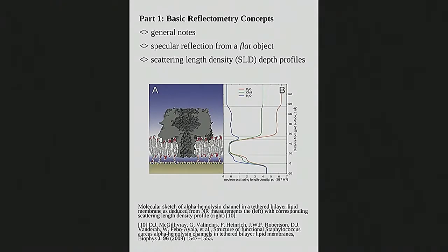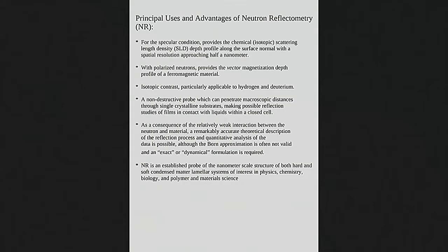To start out, we're going to talk about some general concepts. There's a picture here of an alpha-hemolysin channel, through which different biological molecules traverse the membrane around cells. Neutron reflectometry has found a lot of application in determining the nanoscale structure of these transmembrane proteins or pores, and we'll have a couple of examples through the presentation.